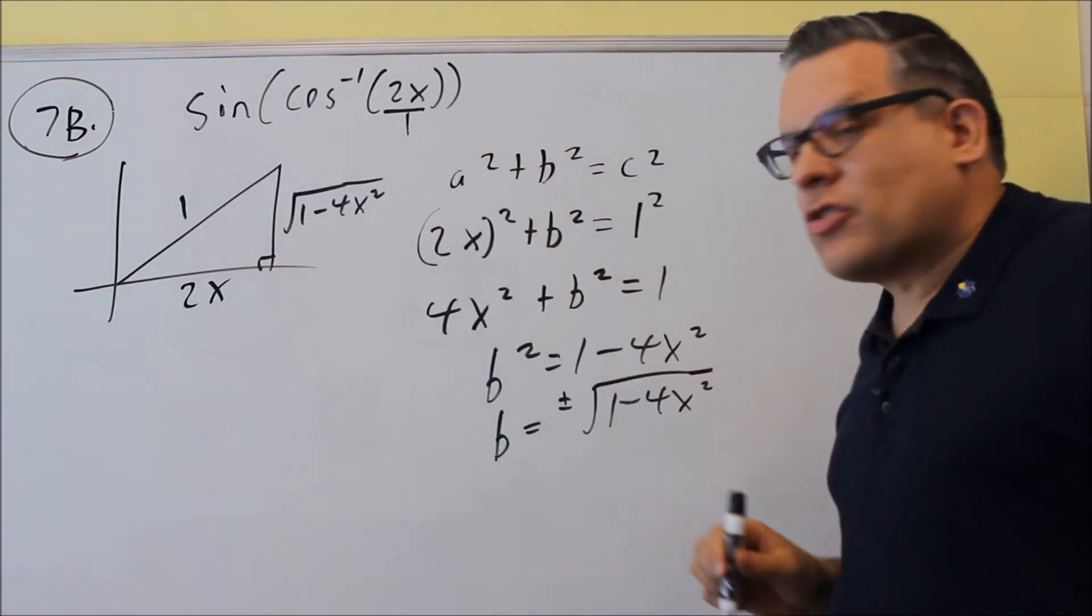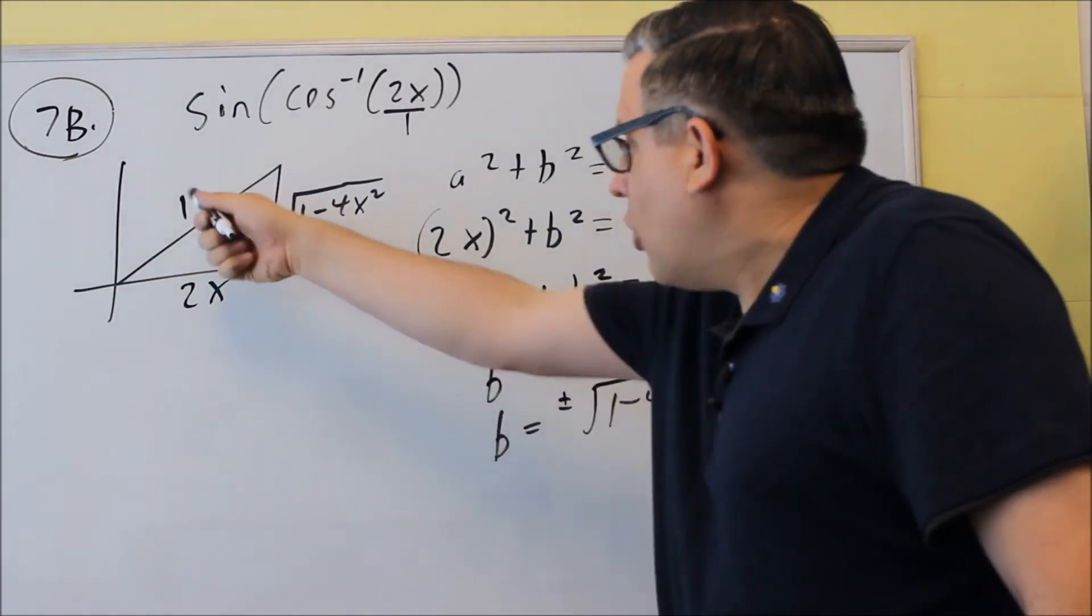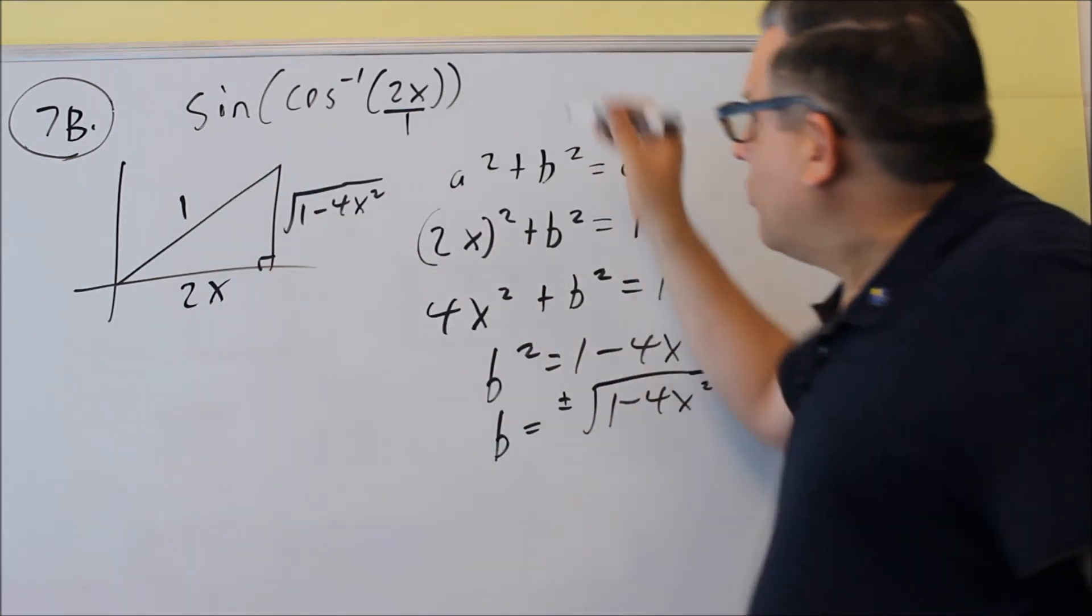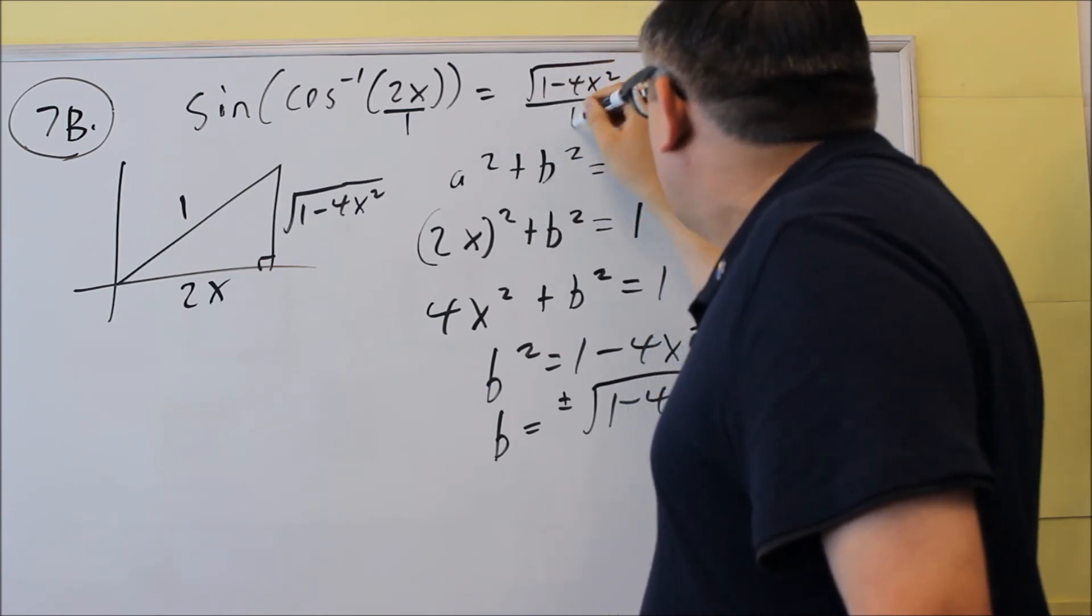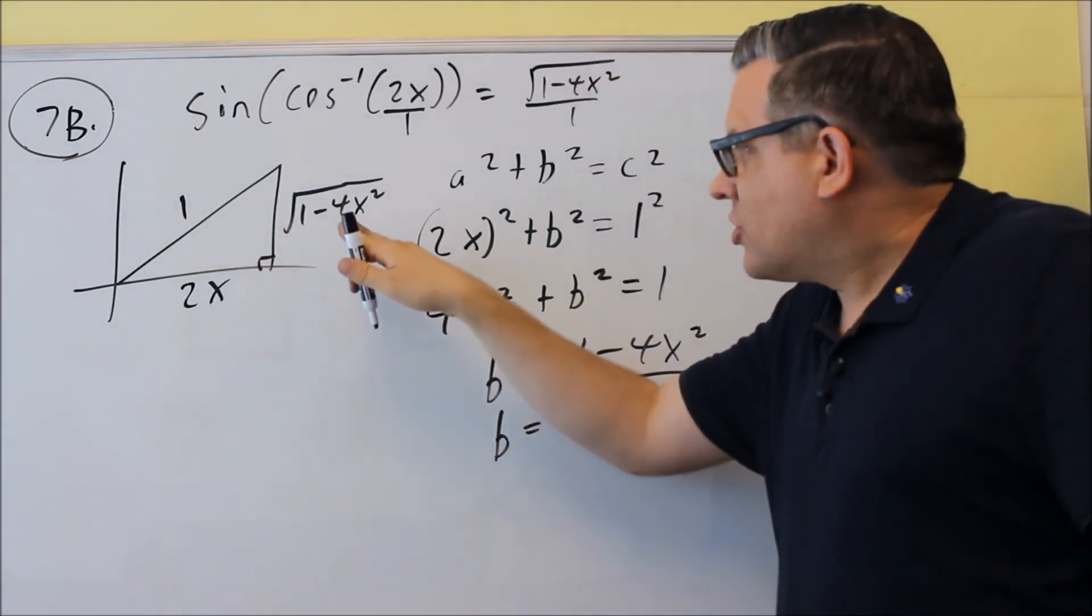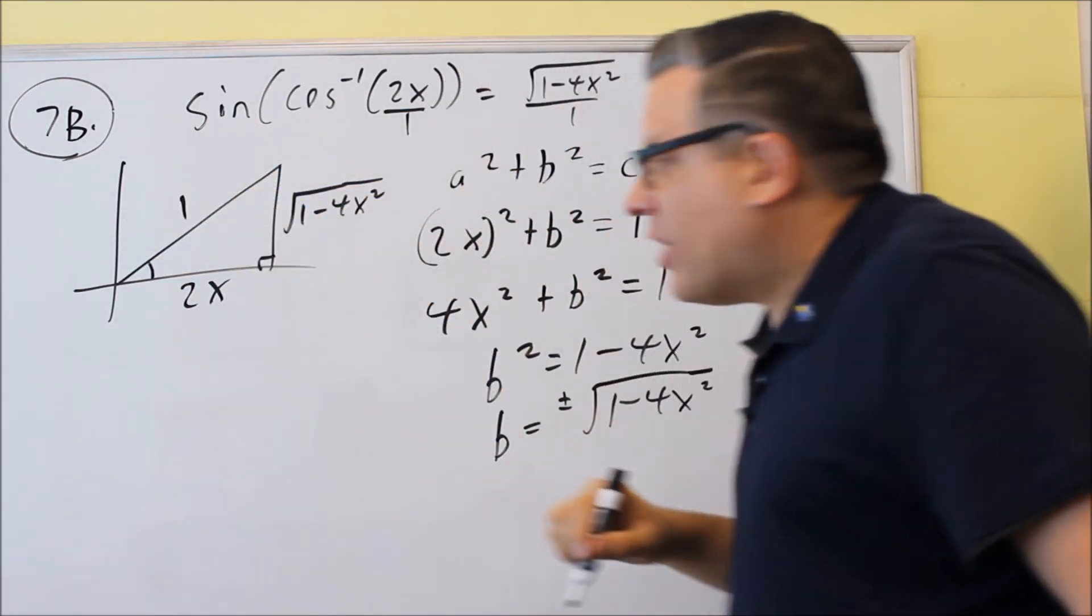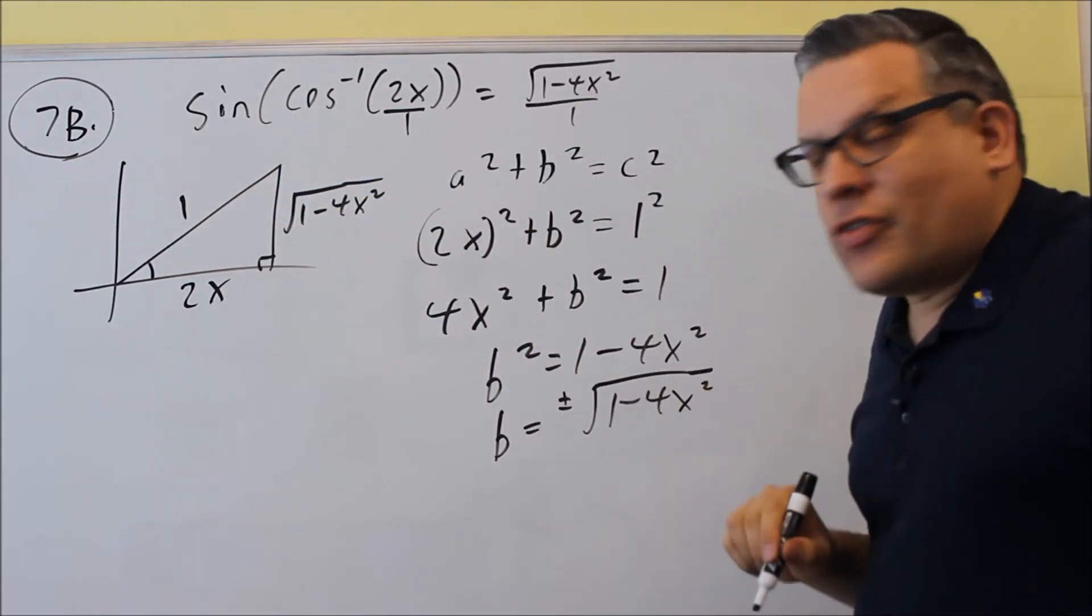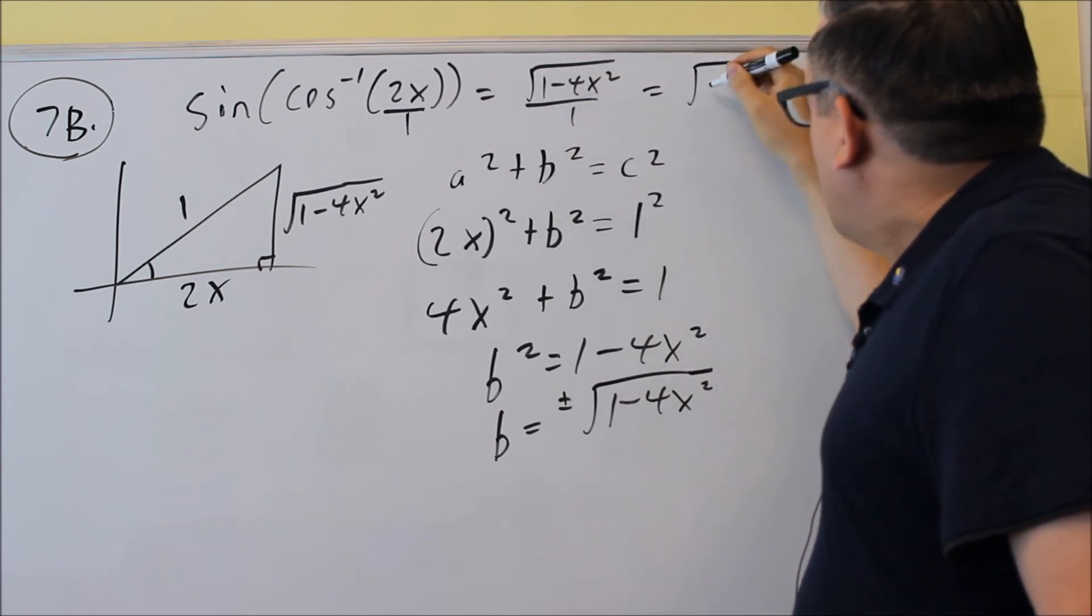Now I just need to use the definition for sine to get my answer. Sine is the opposite over hypotenuse. So in this case, I have the square root of 1 minus 4x squared over 1, so opposite over hypotenuse. Your angle would always be that one, measured from the positive x-axis. And so your answer would just be this, or you don't even need the one down below.